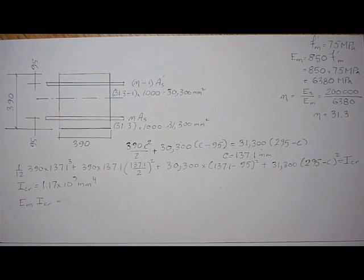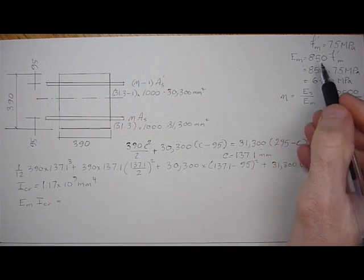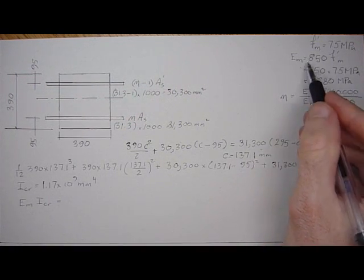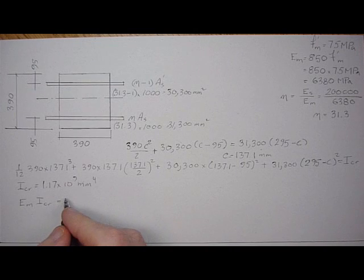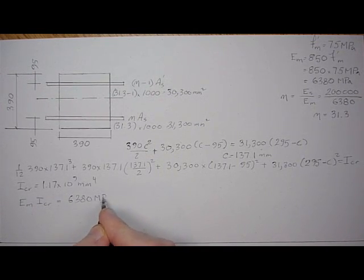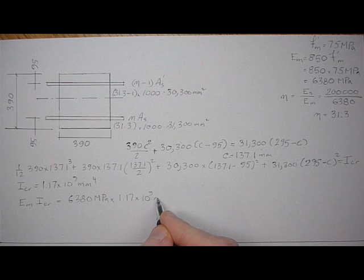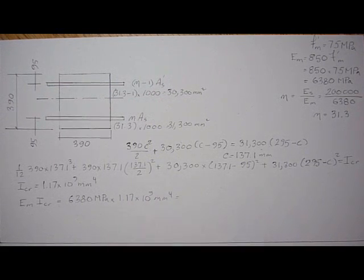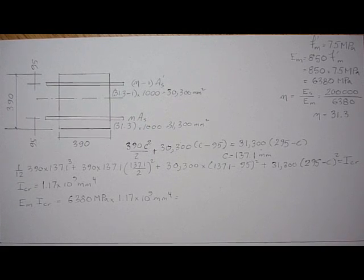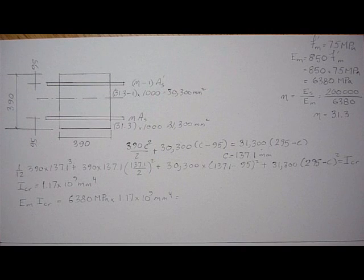And E_M times I-cracked is equal to 850 times 7.5, so E_M is 6380, times I-cracked 1.17 times 10 to the 9 millimeters to the 4, giving 6380 times the answer: 7.46 times 10 to the 12 Newton·millimeters squared.